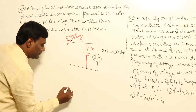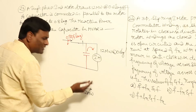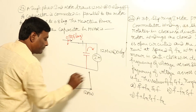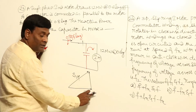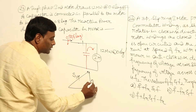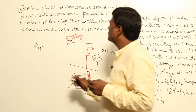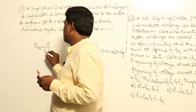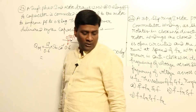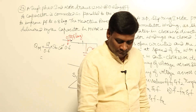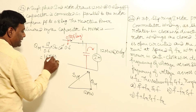For the induction motor absorbing 12 megawatt at 0.6 lag, we calculate the reactive power Q of the induction motor. Active power P is 12 megawatt, so reactive power Q equals 12 megawatt divided by 0.6 MVA, multiplied by sine of cosine-inverse of 0.6. This gives Q of induction motor equal to 16 MVAR.